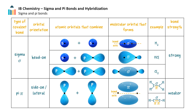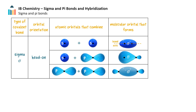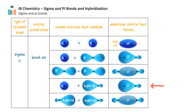At this point, we can revise our table from before. Let's focus on sigma bonds and add on two other types of sigma bonds: those formed from s-orbital overlap with a hybrid orbital, or a hybrid orbital overlap with a hybrid orbital.